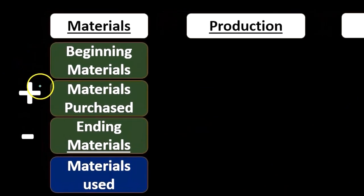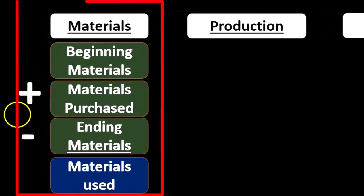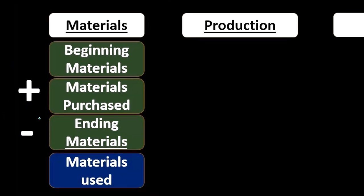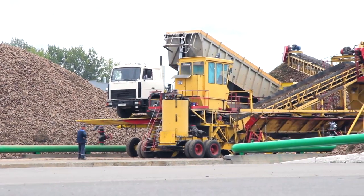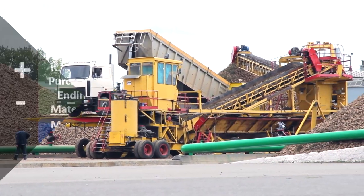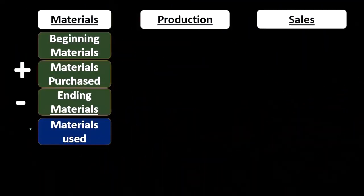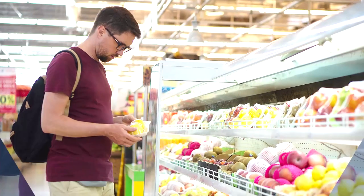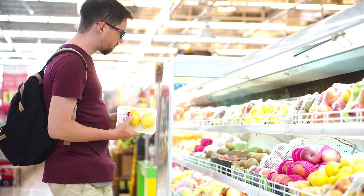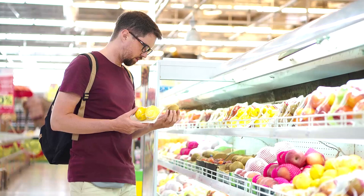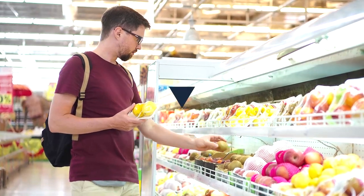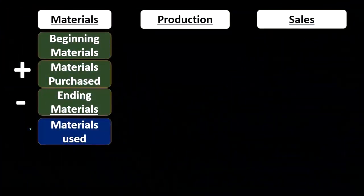Specifically, we have beginning inventory of materials, then we can note a subcategory called materials available for use, and then subtract ending materials to arrive at materials used. This is our purchasing step — determining the materials we're going to use within production.